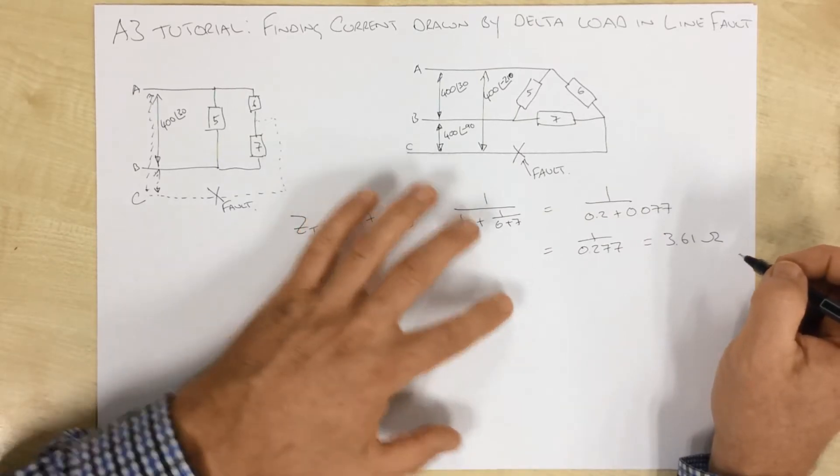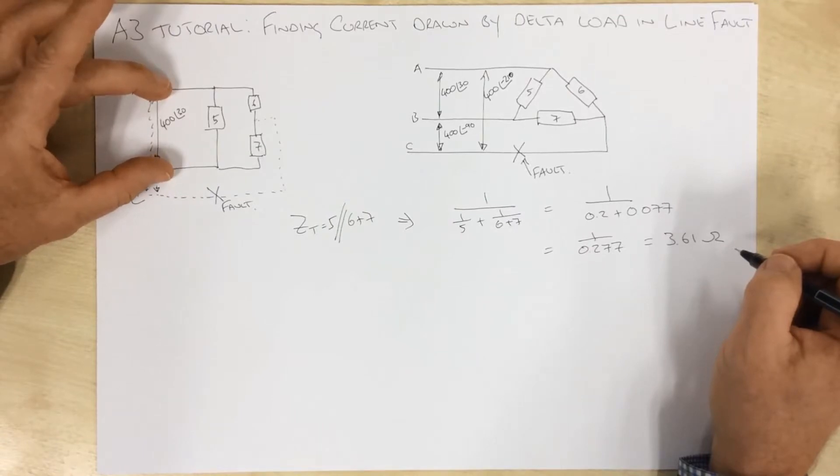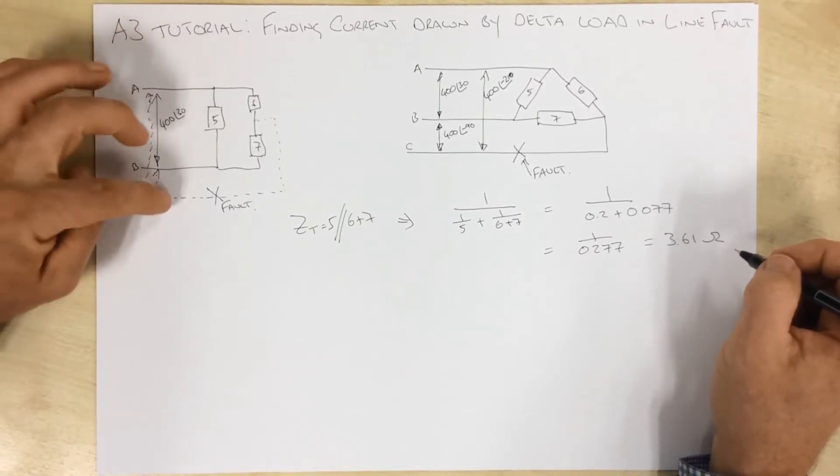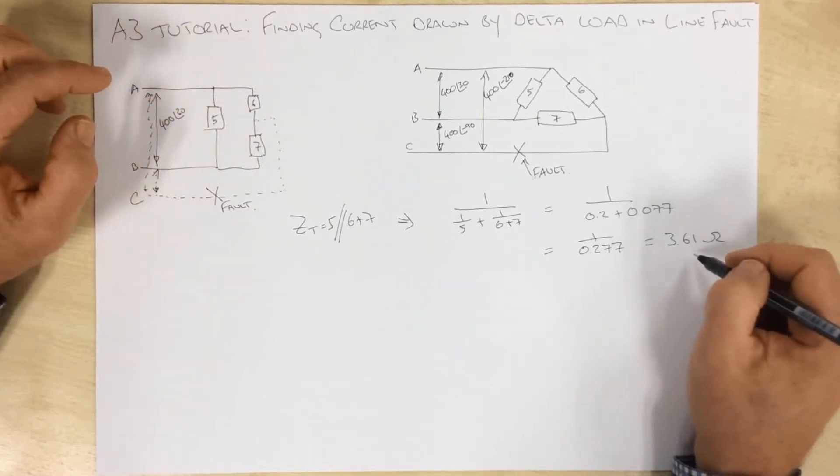So we know that the total impedance of the circuit, as seen by this voltage here, bear in mind this one's faulty, the total impedance of this is actually 3.61.